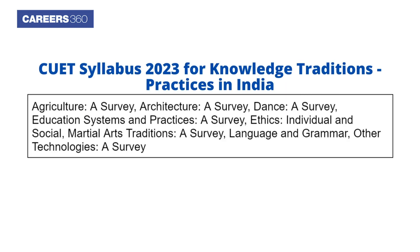CUET syllabus 2023 for knowledge, traditions, and practices in India includes: agriculture — a survey, architecture — a survey, dance — a survey, education system and practices — a survey, ethics and individual and social martial arts traditions — a survey, and language and grammar along with other technologies — a survey.